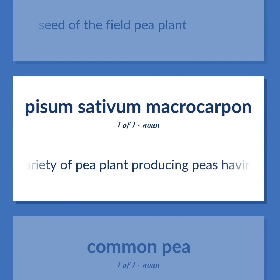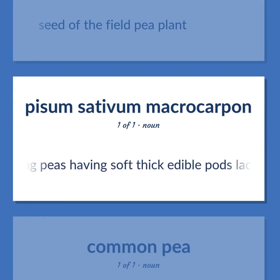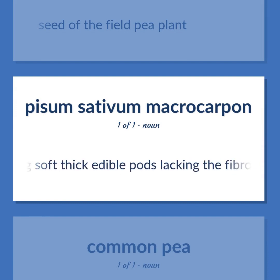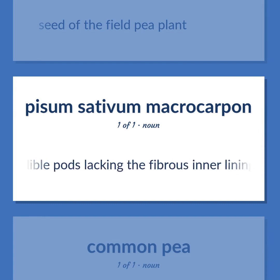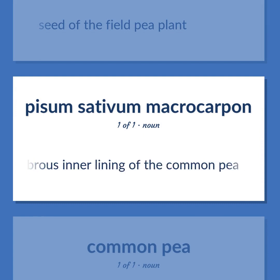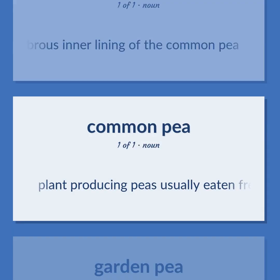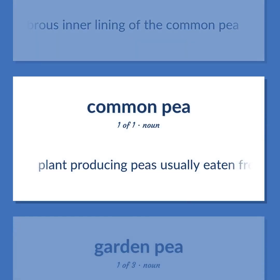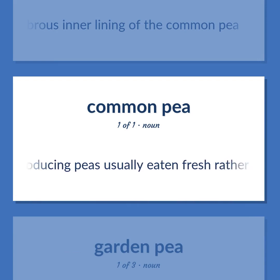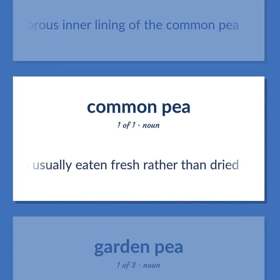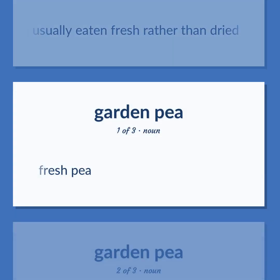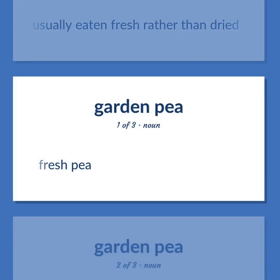A variety of pea plant producing peas having soft thick edible pods lacking the fibrous inner lining of the common pea. Plant producing peas usually eaten fresh rather than dried. Fresh pea.